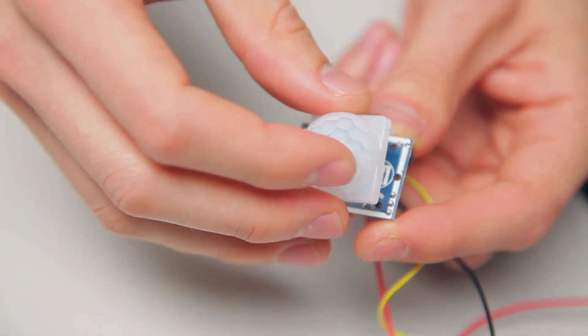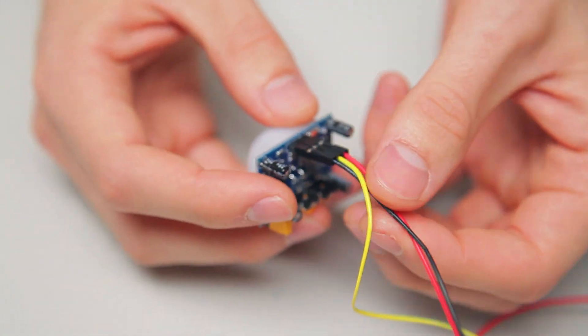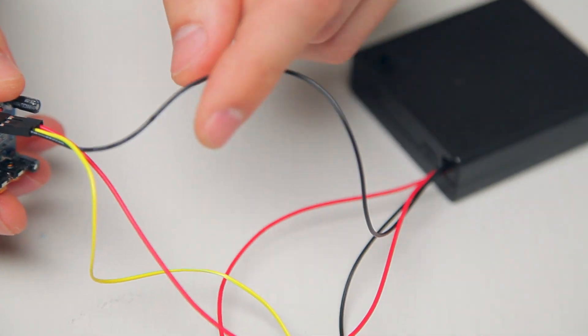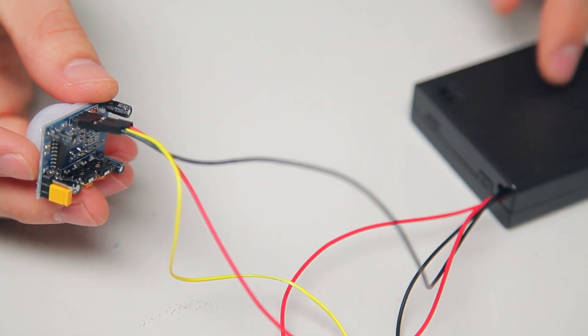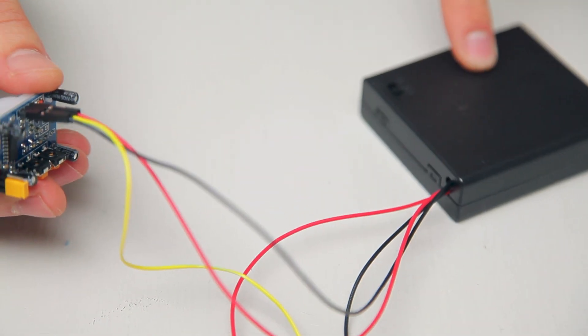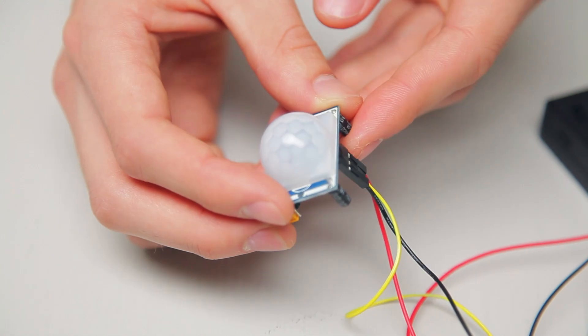If you replace the cap and take a look at the back, your sensor has three pins. Now we've attached a wire to each of these three pins. First we have a black wire going to the negative terminal of our battery pack. Then we have a red wire going to the positive terminal on our battery pack. These two wires are what actually power our motion sensor.